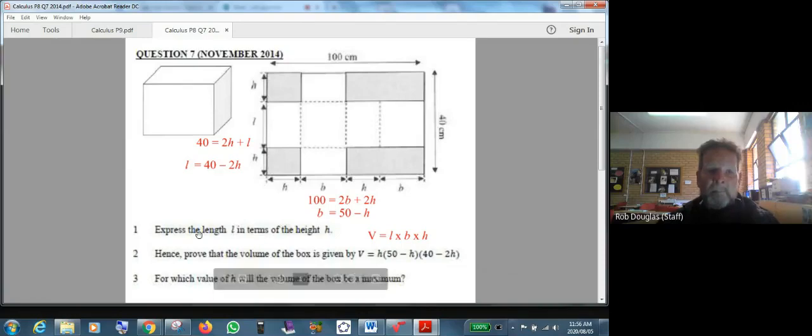The first question gives you a bit of a hint. It says express the length in terms of h. Well, you just go down there's the length, but I can see if I take two h's and an l and add them together I get 40. That's what this is, it's 40 is the width of this piece of paper. So I go 40 equals 2h plus l. But they said express l in terms of h, so all we do is subtract the 2h and we get l equals 40 minus 2h.